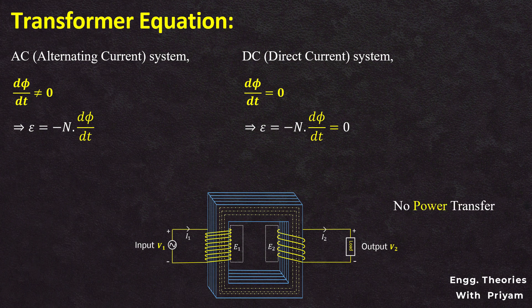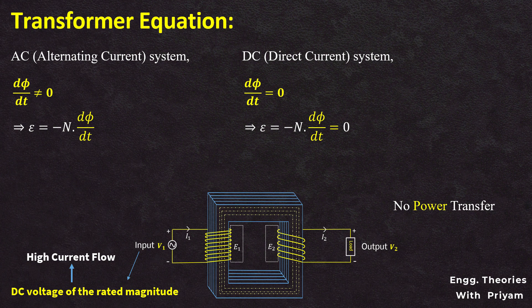Furthermore, applying a DC voltage of the rated magnitude to the primary circuit of the transformer will result in a high current flow as there is no counter induced EMF to limit it. This intense current will generate heat, causing the insulation of the winding to deteriorate, potentially leading to a severe burn.